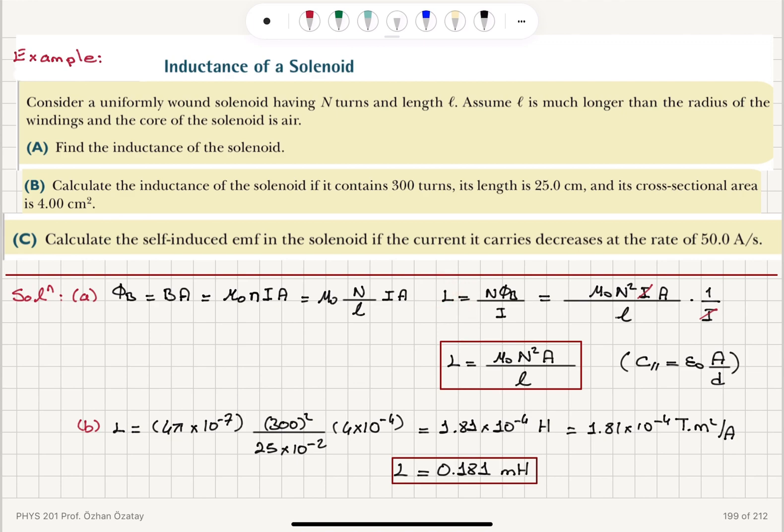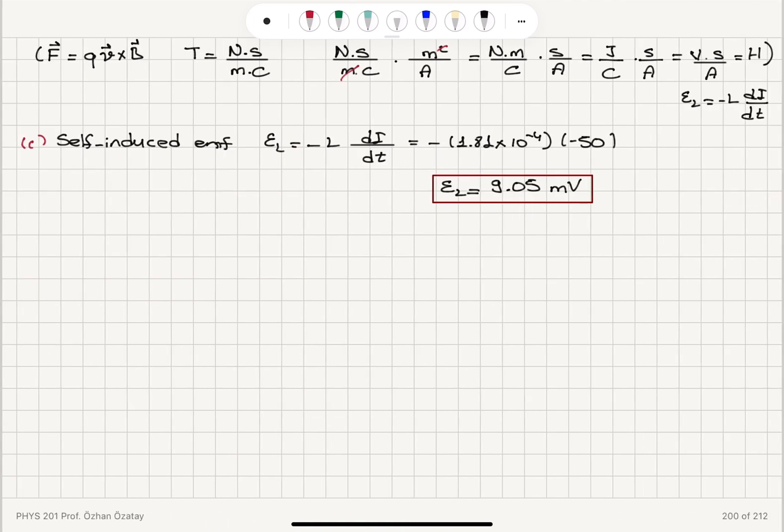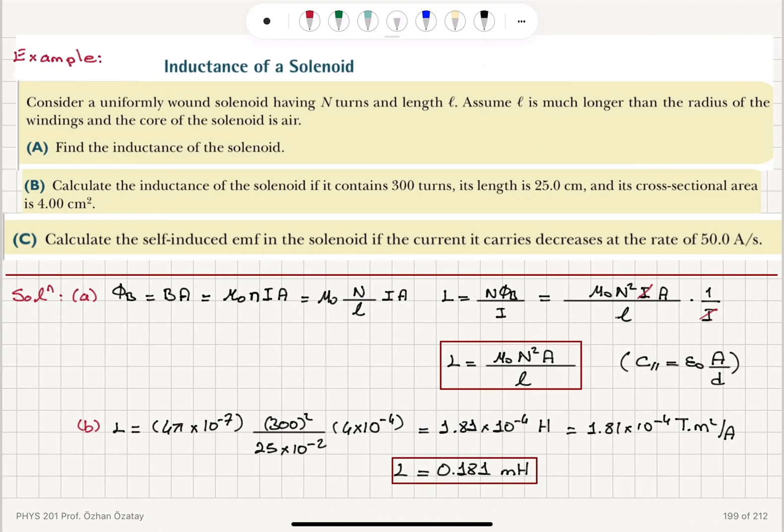And the inductance, remember, is defined by epsilon L equals minus L di dt, which is minus n phi b and d phi b dt. So L is n phi b over I. So this is going to give us mu zero capital N squared area A divided by the length L as the inductance of the solenoid.